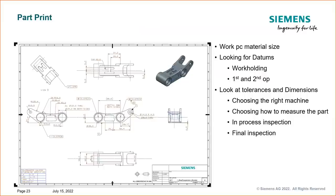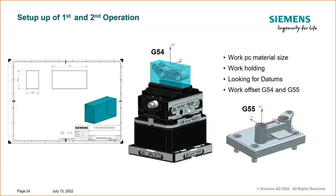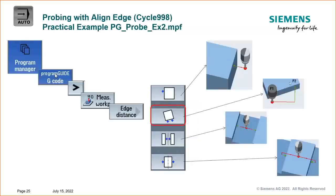We need to choose the right machine once we figure out dimensions, then determine how and where we'll measure, whether we need in-process checking, and how we'll finally inspect the part. We need to know material size, how to set G54 and G55 — how to clamp in first-op and second-op — and where to set those offsets. For first-op we'll set on top of the block on raw material, then pick up a hole on the second-op finished part from first-op.